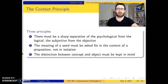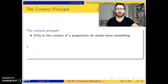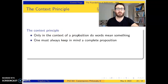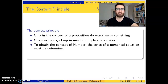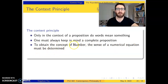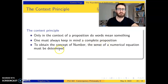All these principles are crucial to understand Frege's overall project, but for now the context principle is important for us. According to the context principle, only in the context of a proposition do words mean something. One must always keep in mind a complete proposition. To obtain the concept of number, the sense of a numerical equation must be determined — so in order to obtain the meaning of a number term, the sense or the conceptual content of a numerical equation must be determined.